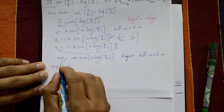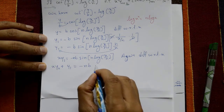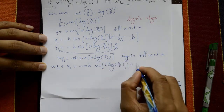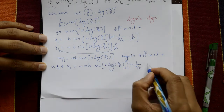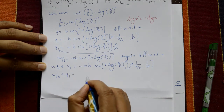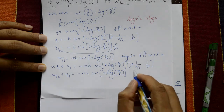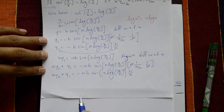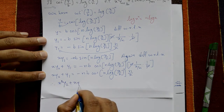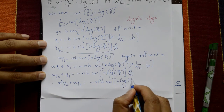Differentiating x y₁ again using the product rule: x y₂ + y₁ = −nb · cos(n · log(x/n)) · n · (1/x). Multiplying both sides by x: x² y₂ + x y₁ = −n² b · cos(n · log(x/n)).